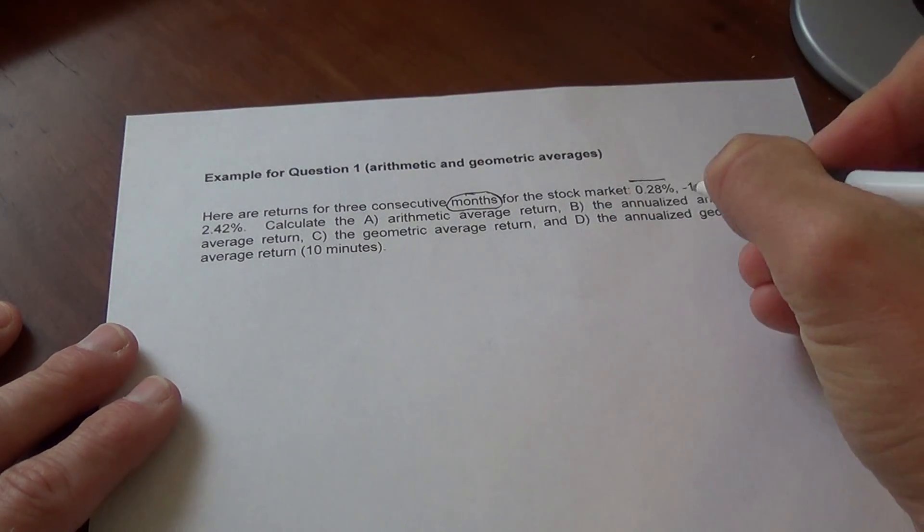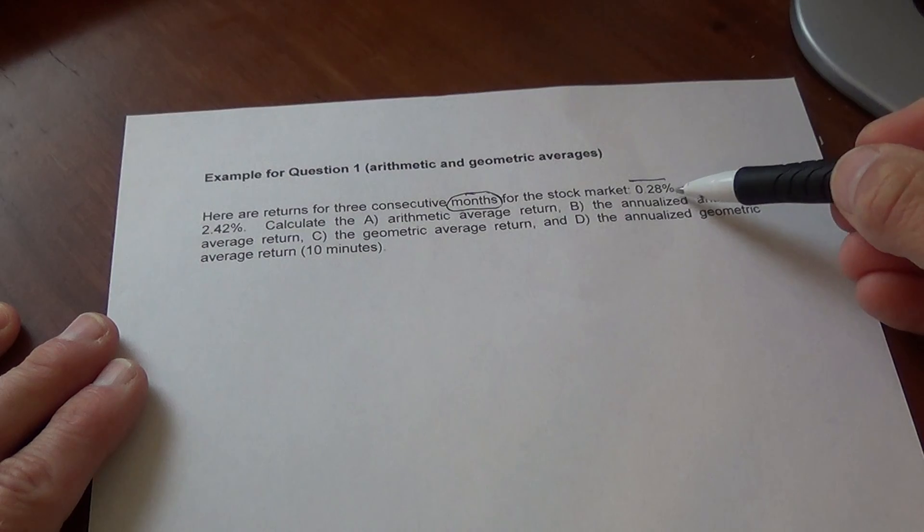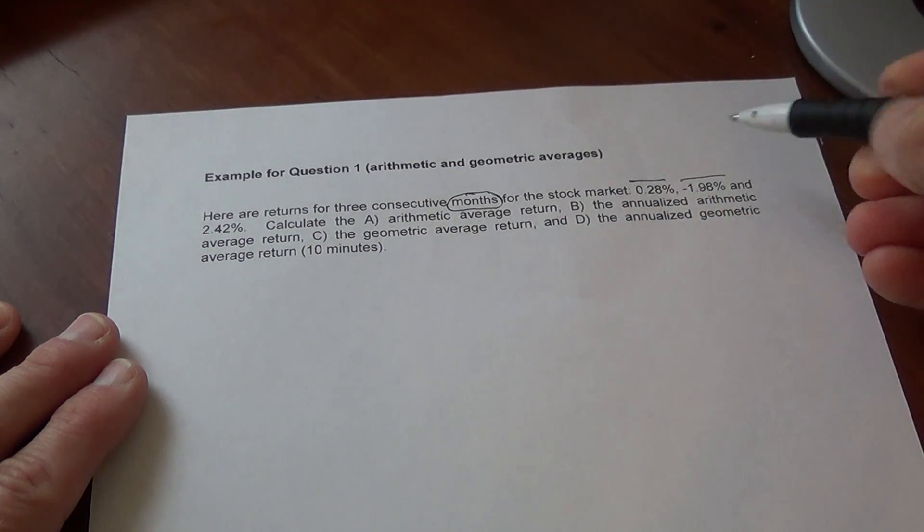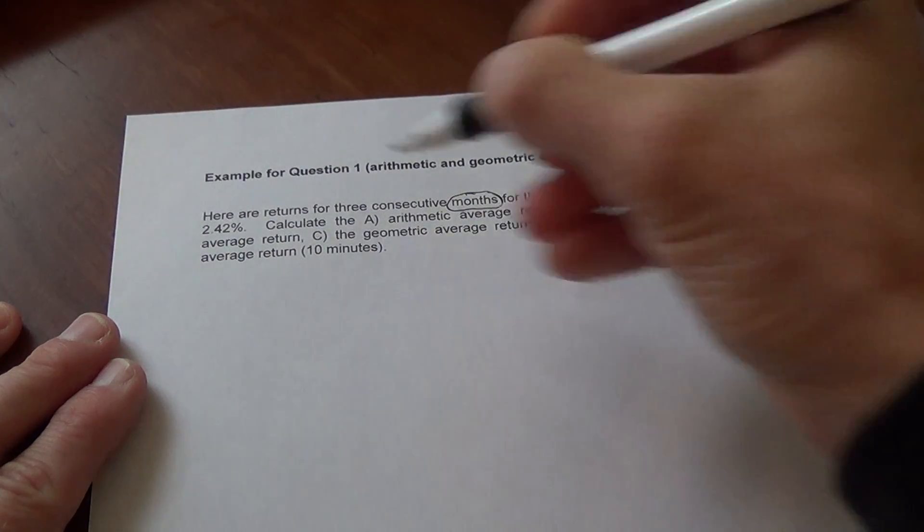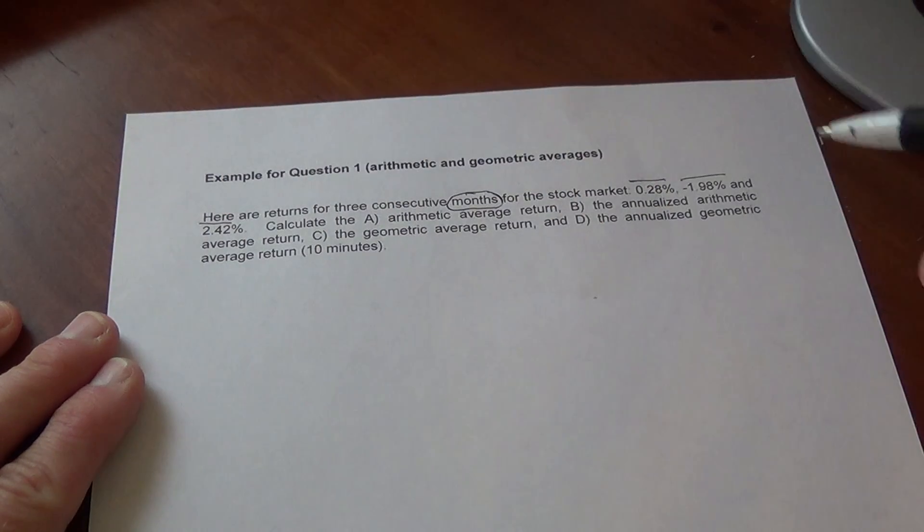The first month's return, the market was up 0.28%. The second month, the market was down. And the third month, the market was up.